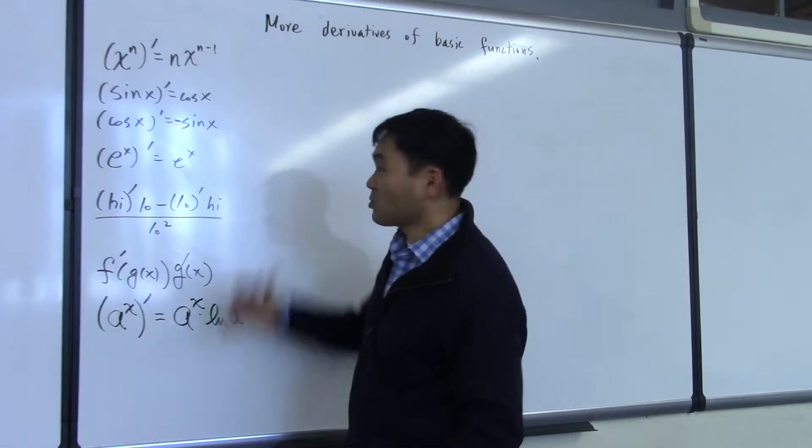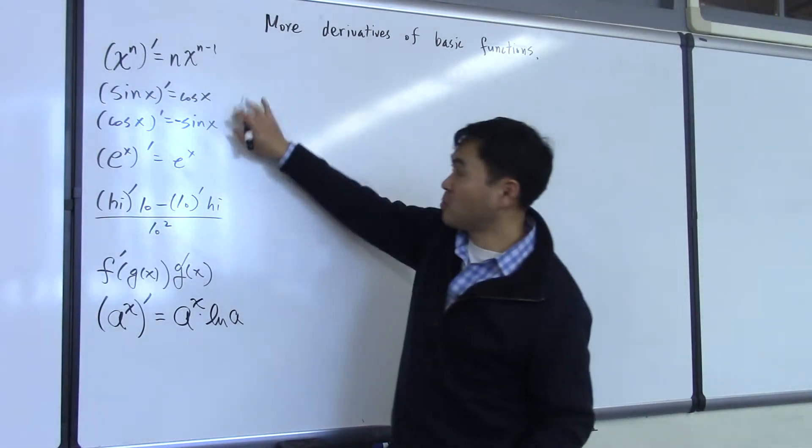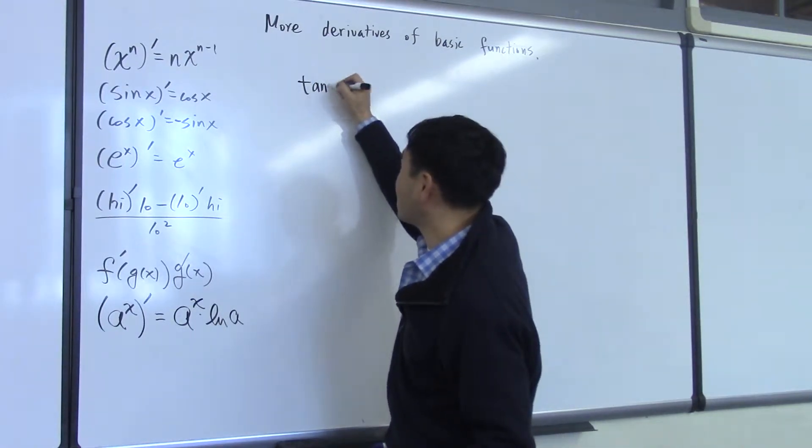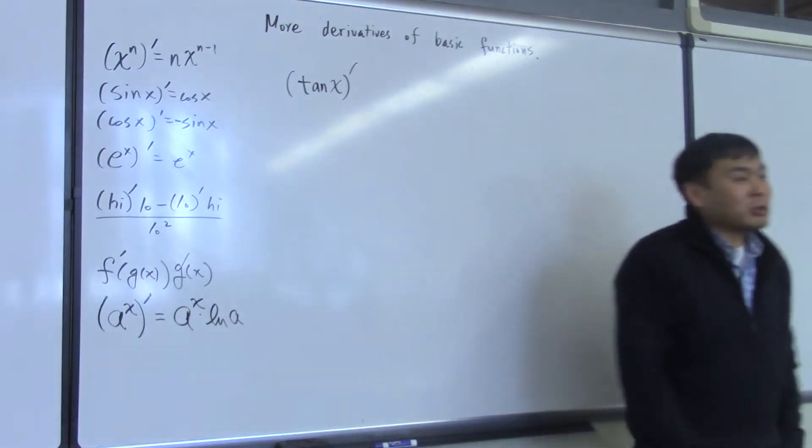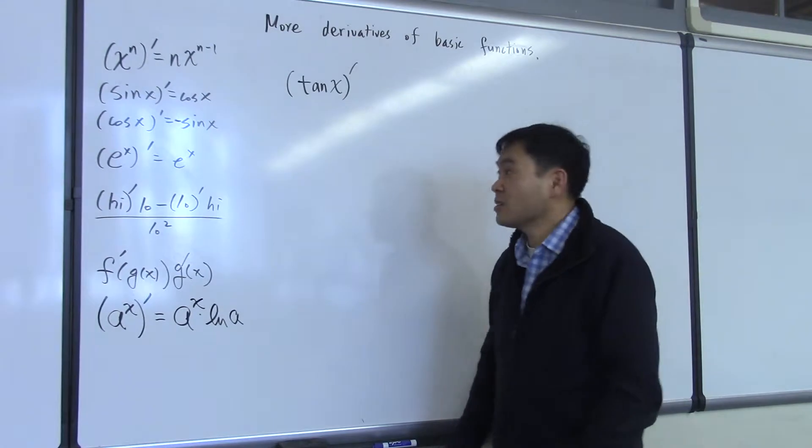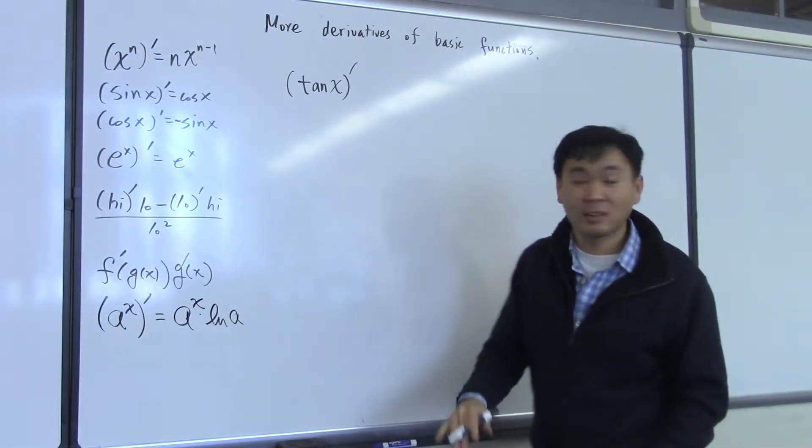What's another function that you wish you knew? I have sine and cosine, so what should follow? Tangent? Tangent of x. Let's try to figure out what tangent x prime is. Okay, what rule should we use? Can we make use of these two formulas to find this? Yes. How?